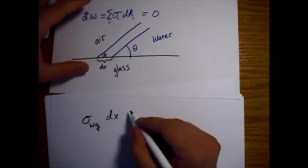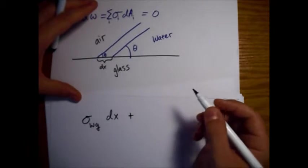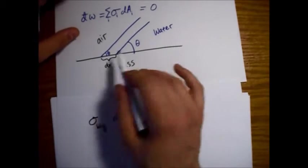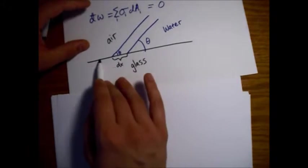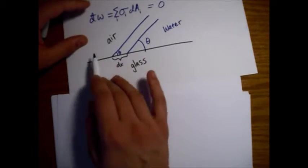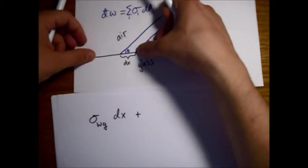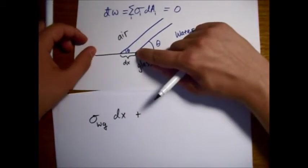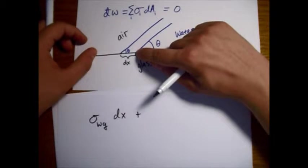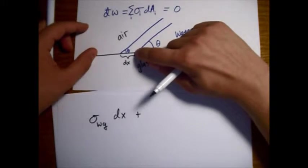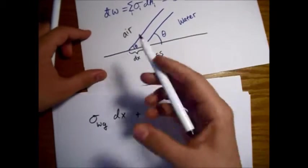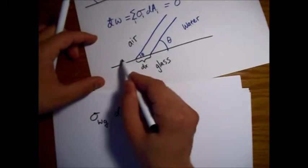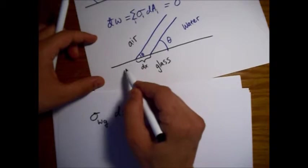On the other hand, the other one that's nice and easy is the interface between the air and the glass. So, the interface between the air and the glass to start off was this long. And then it got smaller by this much. So now there's only this part, which is the interface between air and glass.